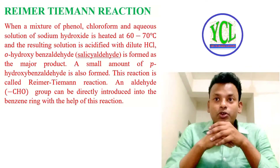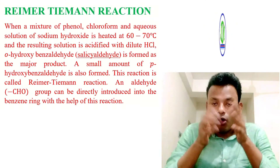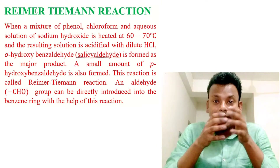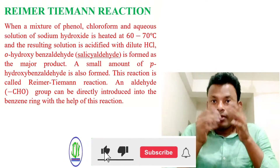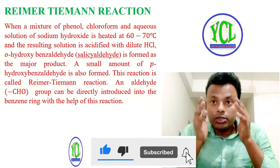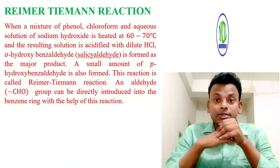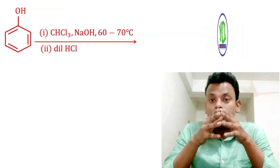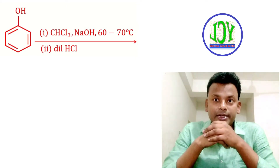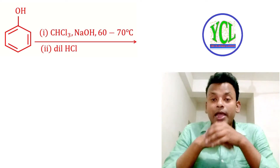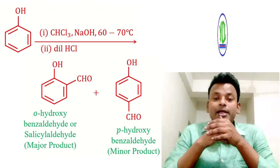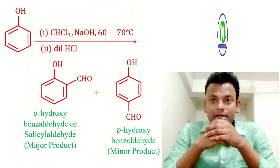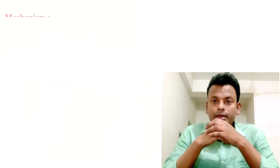A small amount of para-hydroxybenzaldehyde is also formed. This reaction is called the Reimer-Tiemann reaction, and the aldehyde group — that is the CHO group — can be directly introduced into the benzene ring with the help of this reaction. Phenol reacts with chloroform and NaOH at 60 to 70 degrees centigrade, and hydrolysis with dilute HCl gives ortho-hydroxybenzaldehyde or salicylaldehyde as the major product, and para-hydroxybenzaldehyde as the minor product.